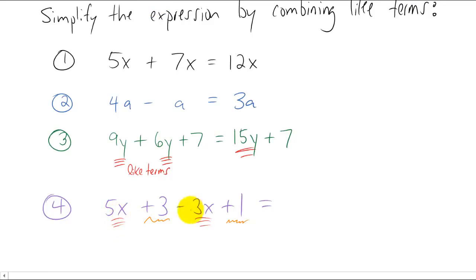So we're going to combine the five x and the negative three x. So if you have five of something and subtract three of that same thing, you're left with two of that thing. And then we have to look at the plus three and the plus one. If you have three and you add to that one, you're left with four.